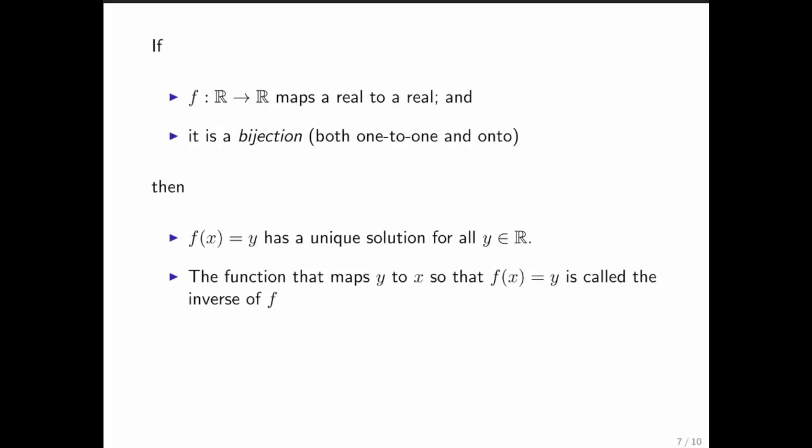When you have this, if you then ask, what function is it that, when given as input Y, gives us back the X that maps to it, that function is called the inverse of function F. And that function is often denoted by F inverse. And notice that it maps ℝ to ℝ again.